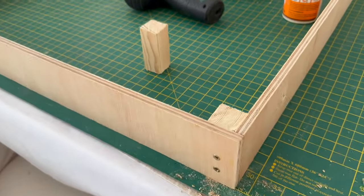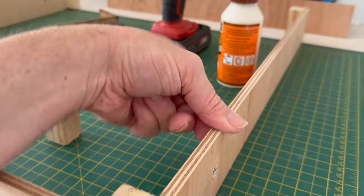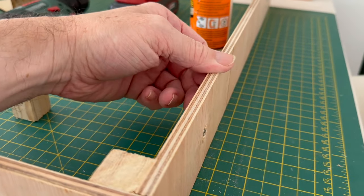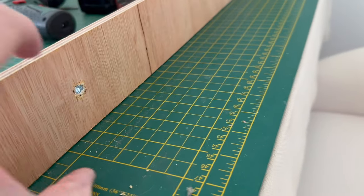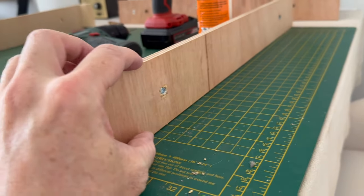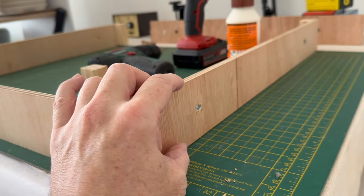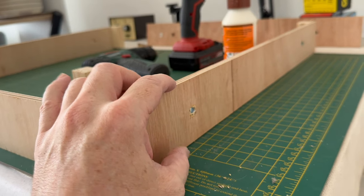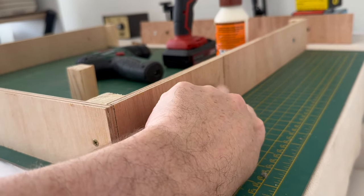And the way I've done it is using this 9mm ply. It's 70mm tall to allow room for points or any other wiring or gadgets I've put underneath my baseboards.